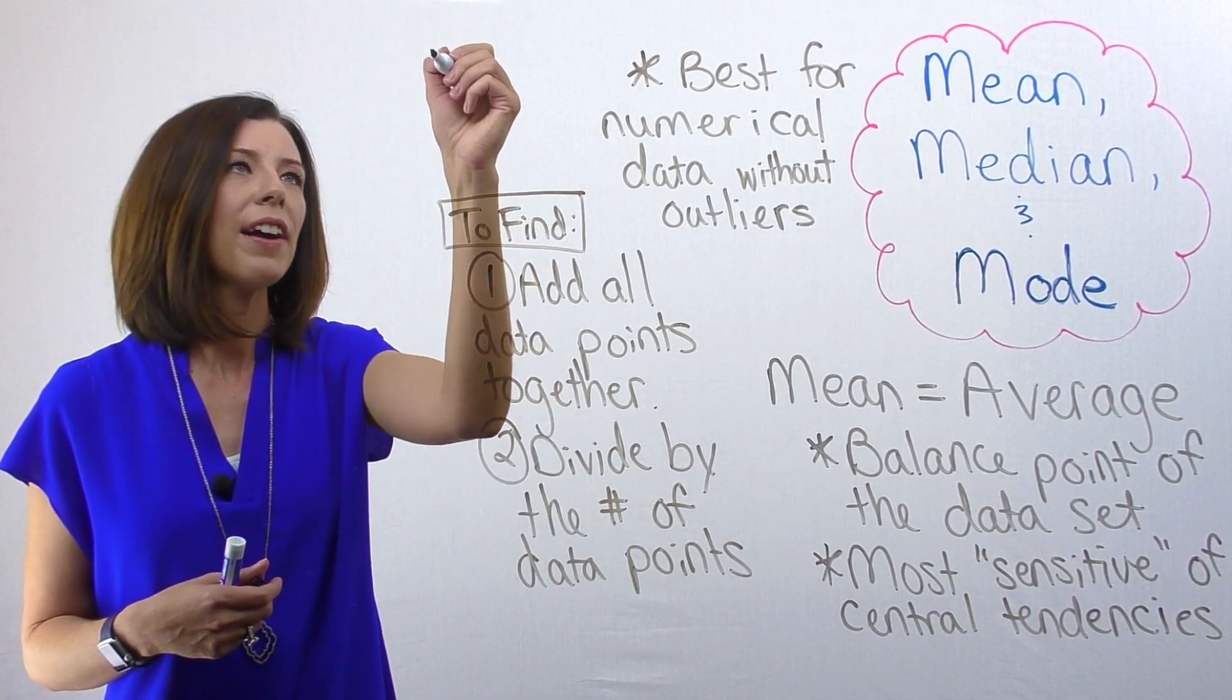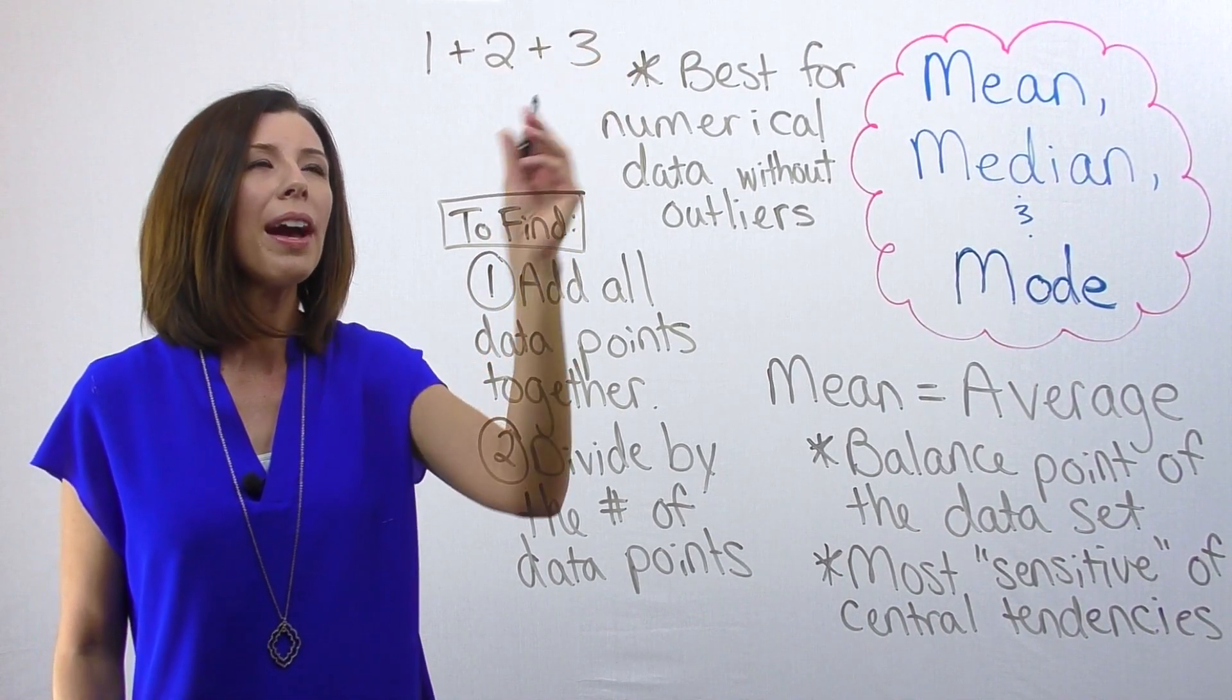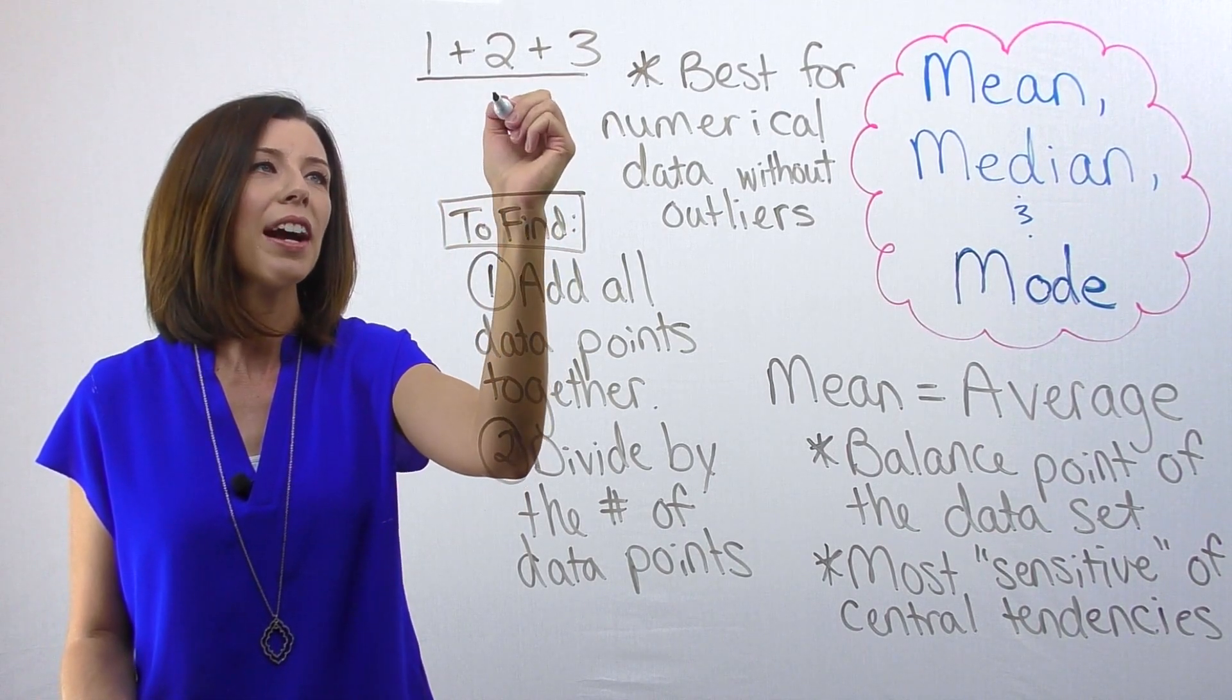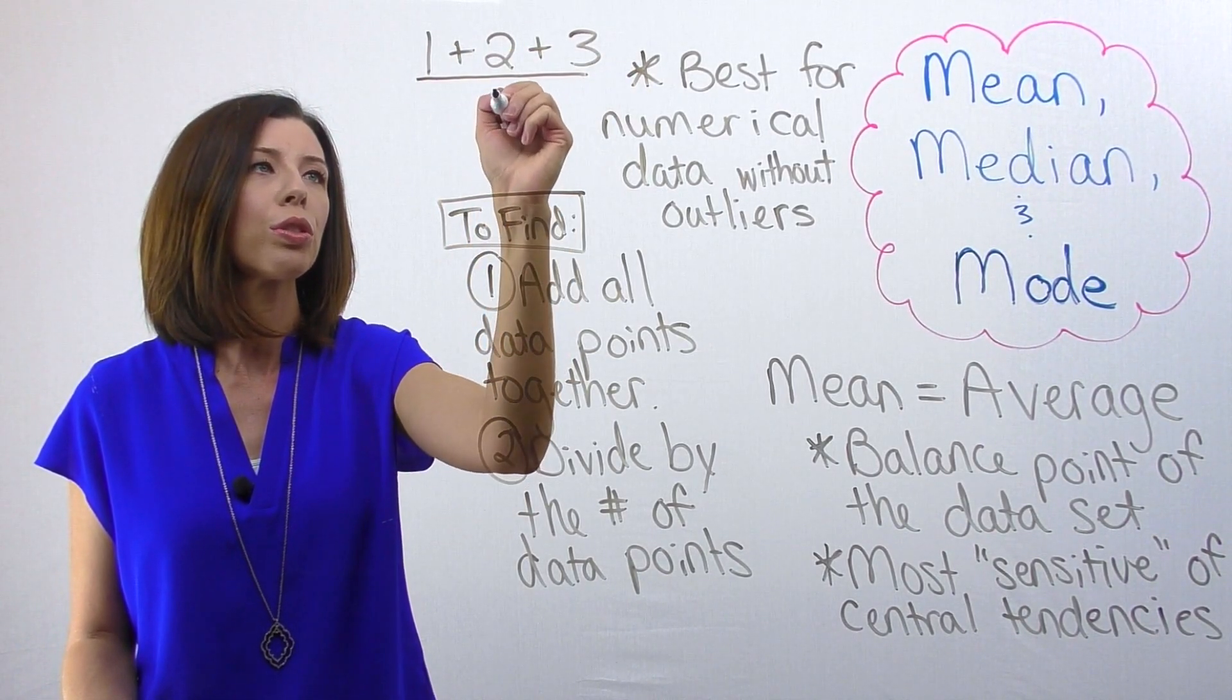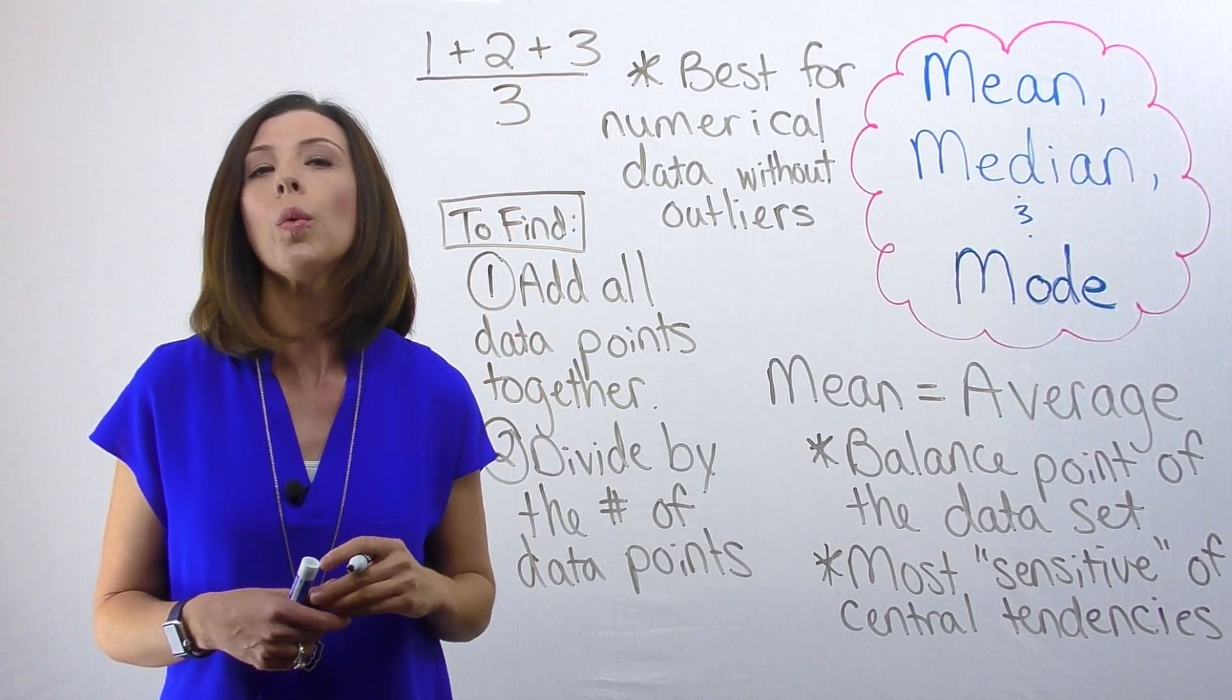So for example, if I have just three data points: one, two, and three, I'm going to go ahead and add those all up together. One plus two is three, plus three is six. Then I'm going to divide that by one, two, three data points. So my average for one, two, and three would be two.